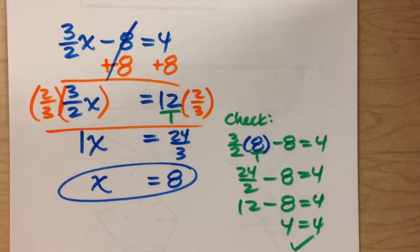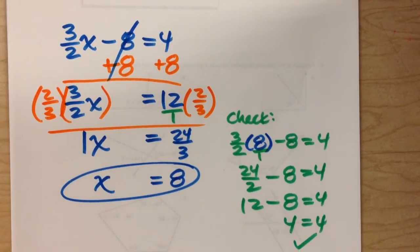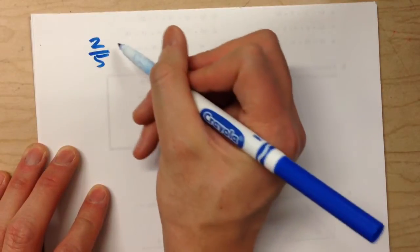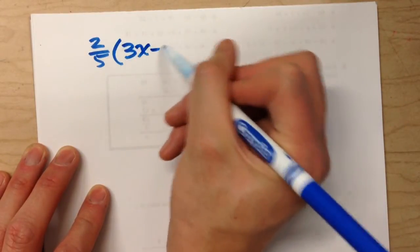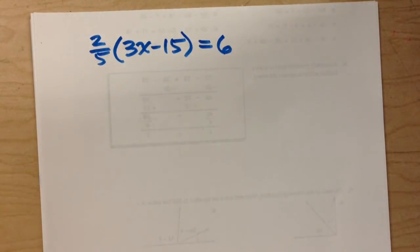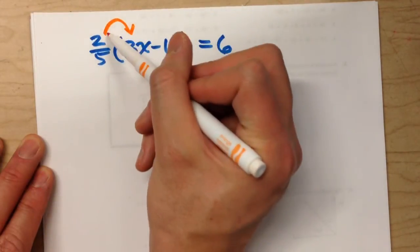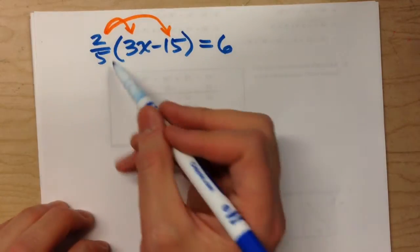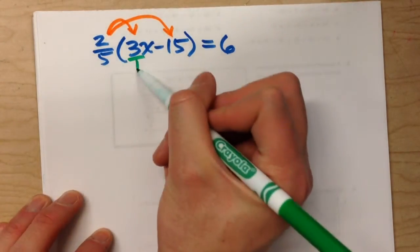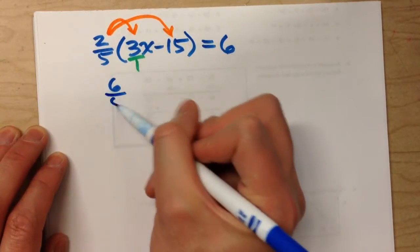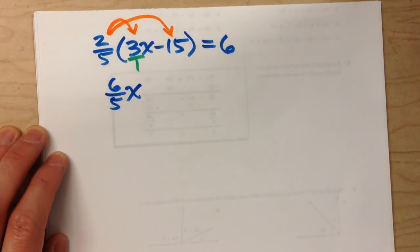We did one more example in class today, and it was a harder problem — it had the distributive property. The equation was 2 fifths times (3x minus 15) all equals 6. First step: distributive property — multiply 2 fifths times every single thing in parentheses. 2 fifths times 3: put 3 over 1, top times top is 6, bottom times bottom is 5, giving 6 fifths times x.